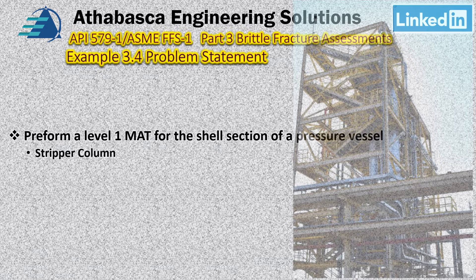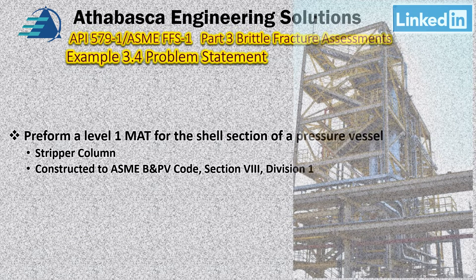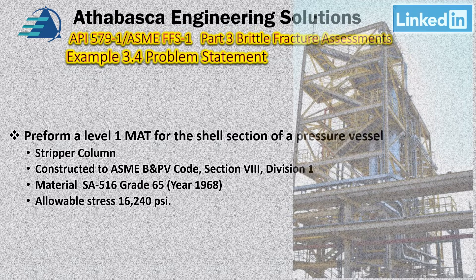In this case, we have a stripper column, so it's a vertical vessel. It was constructed to ASME Section 8, Division 1 of the Boiler Pressure Vessel Code. The material of construction is SA-516, Grade 65 — that's an older material from 1968. The allowable stresses are 16 to 40 Ksi as per the code and material specs of that time period.